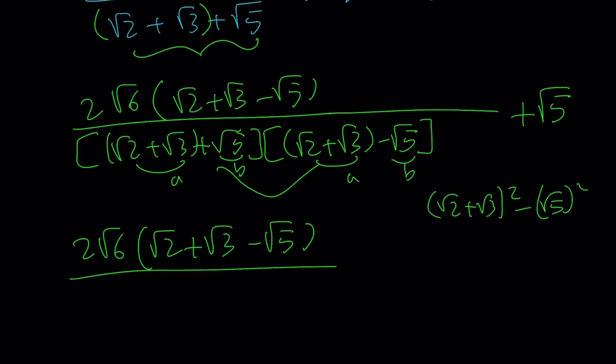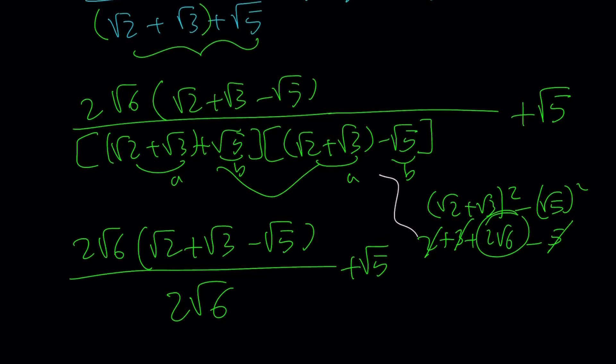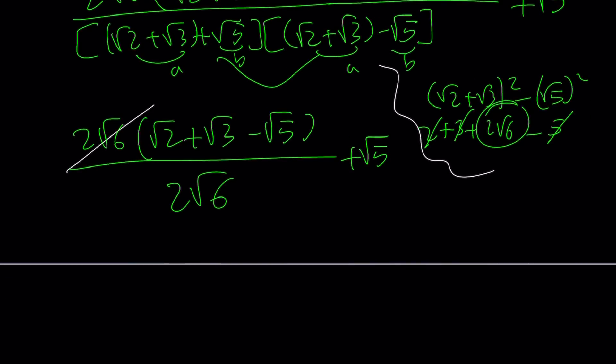2 plus 3 is 5. And you end up with 2 root 6 at the bottom, which is awesome, right? Because 2 root 6 now is going to cancel out. So that's what I got by using difference of two squares. They cancel out. And I end up with the following.